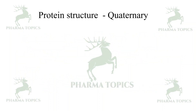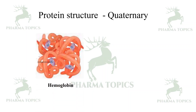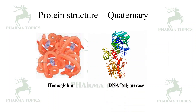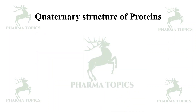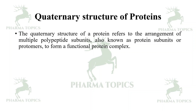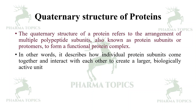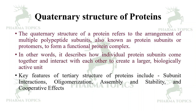Some proteins have a quaternary structure — notable examples include hemoglobin and DNA polymerase. Quaternary structure refers to the arrangement of multiple polypeptide subunits, also known as protomers, to form a functional protein complex. Key features include subunit interactions, oligomerization, assembly, stability, and cooperative effects.